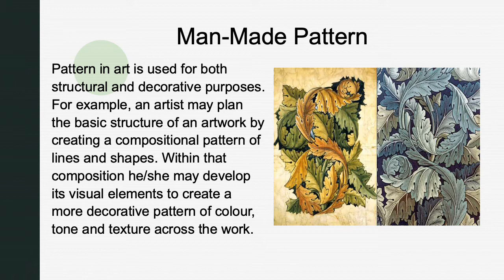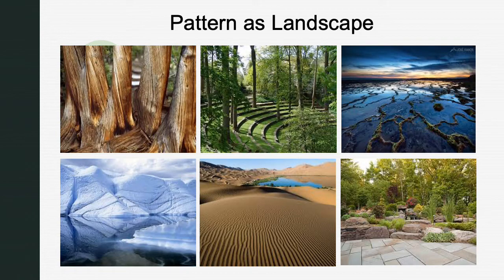Man-made patterns: pattern in art is used for both structural and decorative purposes. For example, an artist may plan the basic structure of an artwork by creating a compositional pattern of lines and shapes, and within that composition, develop visual elements to create a more decorative pattern of color, tone, and texture across the work. You can see natural patterns in a landscape — the scene of snow and tree trunks — as well as sand dunes and a river, while the lower right image shows a man-made pattern in landscape.